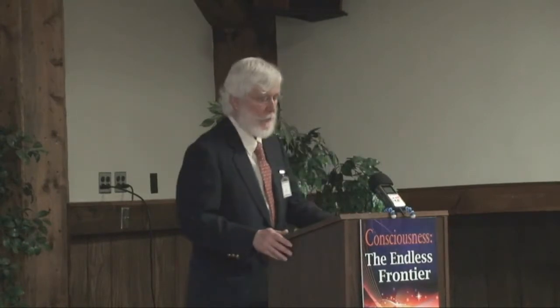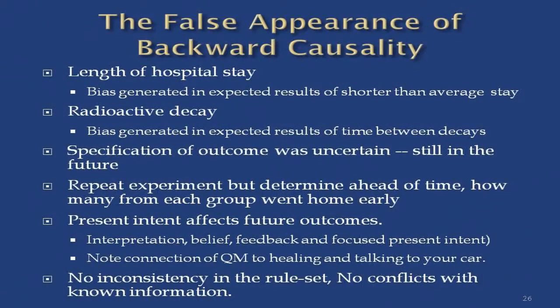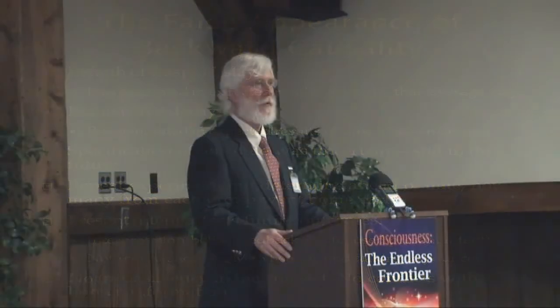Now we're going to use this knowledge to solve some problems — the false appearance of backward causality. This experiment I'm going to give you follows what actually happened, but I'm giving you a simplified version that makes it easy to understand. Imagine 20,000 hospital records going back over two decades. You're going to take those 20,000 records, break them into 20 groups of 1,000, randomly separated, then each group of 1,000 you randomly break into two groups of 500. One is a control group; the other group you're going to use your intent to improve the health of those 500 people.